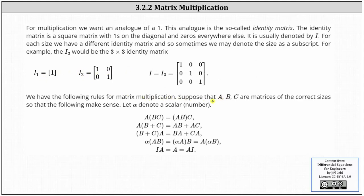We have the following rules for matrix multiplication. Suppose A, B, and C are matrices of the correct sizes such that multiplication is defined, and alpha is some scalar. A times the product of B and C is equal to the product of A and B times C. A times the sum of B and C is equal to A times B plus A times C. Similarly, the sum of B and C times A is equal to B times A plus C times A. The scalar alpha times the product of A and B is equal to the product of alpha and A times B, as well as A times the product of alpha and B. Finally, the identity matrix times A is equal to A, which is equal to A times I. These properties should remind us of similar properties for real numbers.